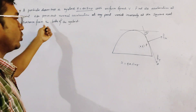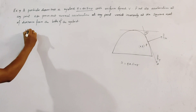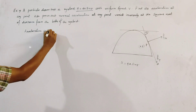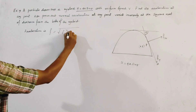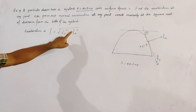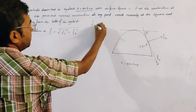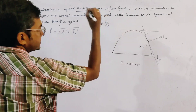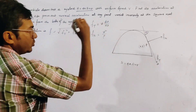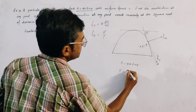Let the coordinates of P be (x, y). We have to find the acceleration at point P. The total acceleration f is given by √(ft² + fn²), that is the square root of tangential acceleration squared plus normal acceleration squared. The tangential acceleration ft = v dv/ds, and the normal acceleration fn = v²/ρ.